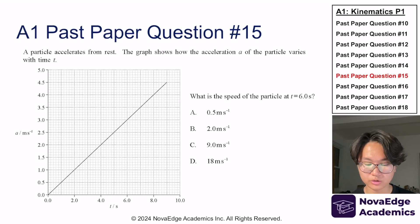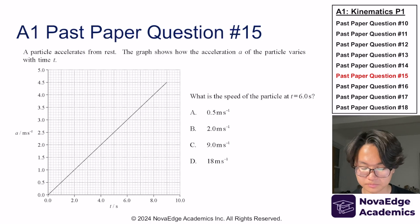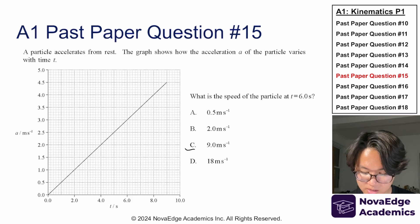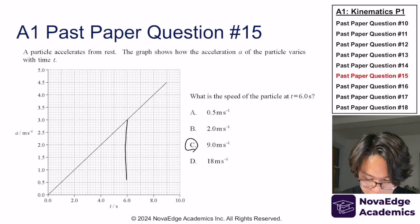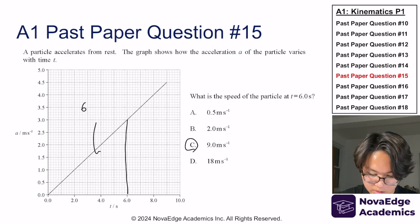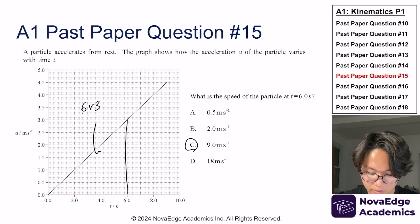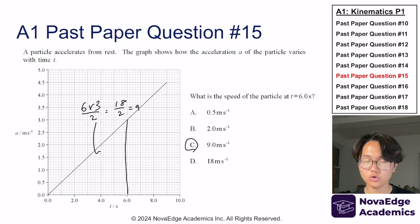Now let's try another question from past paper, topic A1. If you got C, then you are right. We want the speed of the particle at t equals 6, and from the acceleration-time graph, speed is the area underneath the curve. The area here is 6 times 3, giving us the rectangle divided by 2 — so 18 divided by 2 equals 9.